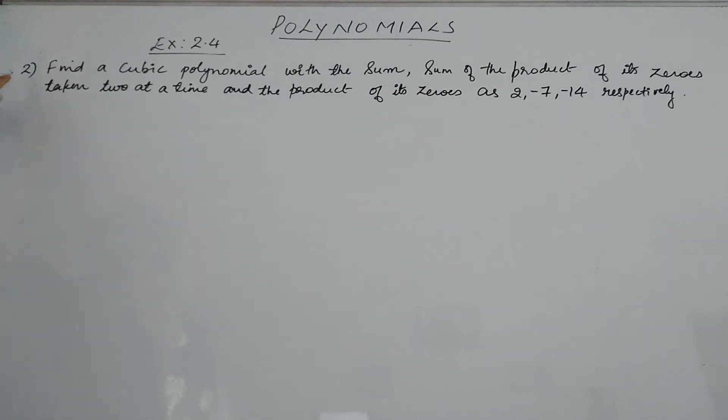Next question is question number 2: find a cubic polynomial where the sum of its zeros, the sum of products of its zeros taken two at a time, and the product of its zeros are 2, -7, and -14 respectively.